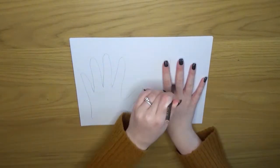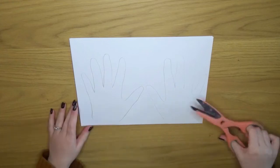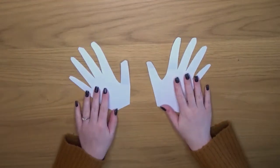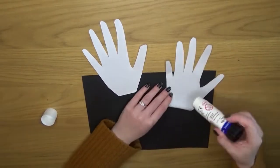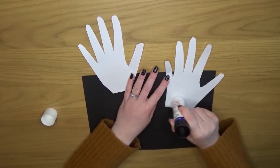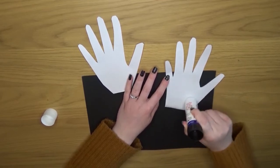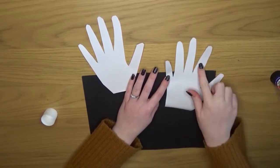So all the children need to do is draw around their hands, cut them out so you have two the same. Get a piece of card and stick the hands to the card. Remember only glue the palm of the hand, not the fingers.